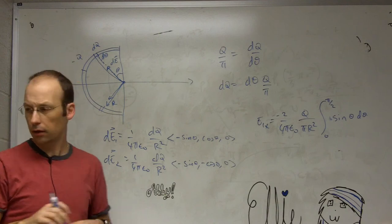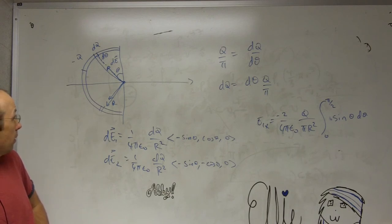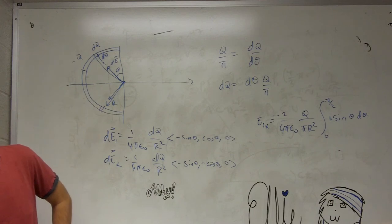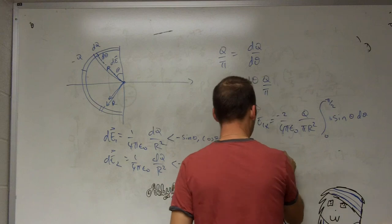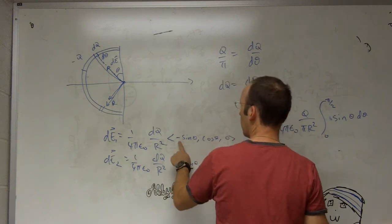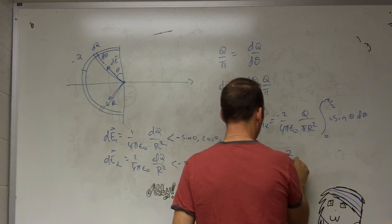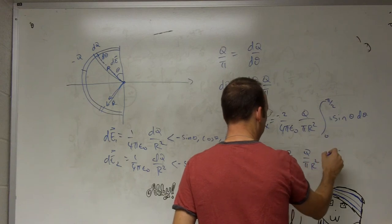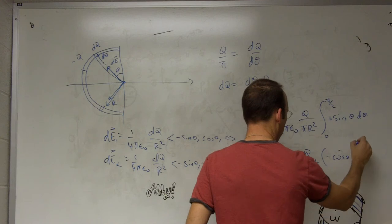I have D theta, and then I have a negative sine theta. Let me move the negative over here. So when I integrate that, I get, where's that negative come from? That's right there. Okay. Let's just proceed. Negative two over four pi epsilon naught, Q over pi, r squared. And this is going to be negative cosine theta from zero to pi over two.